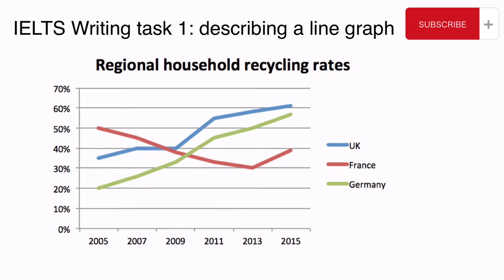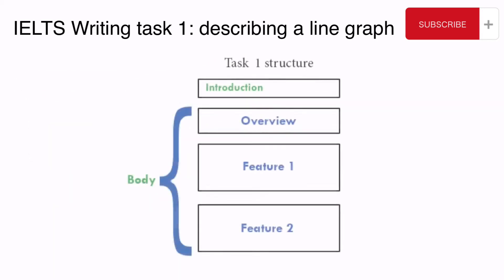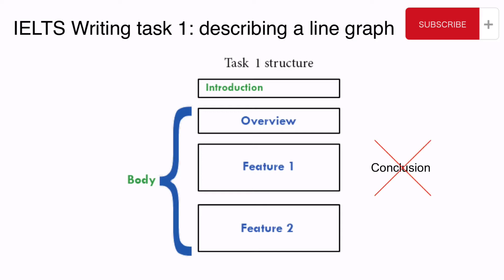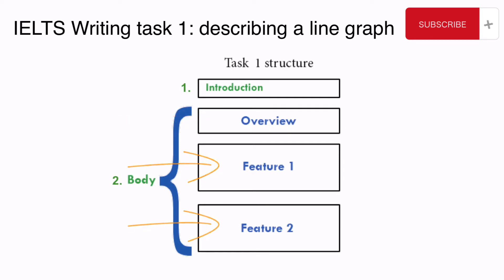Let's see how you should structure your answer. Here is the standard structure that you should follow to give a band 9 answer. It consists of introduction and body paragraphs. You should never write a conclusion when describing a graph. The first paragraph you write is your introduction. After that you start writing your body paragraphs. In your body paragraphs you should first give something called a general overview, and secondly give the detail.